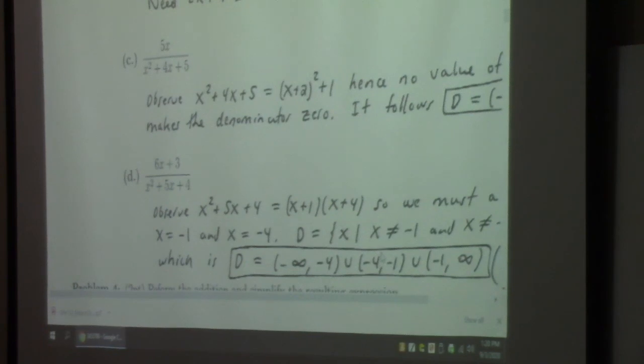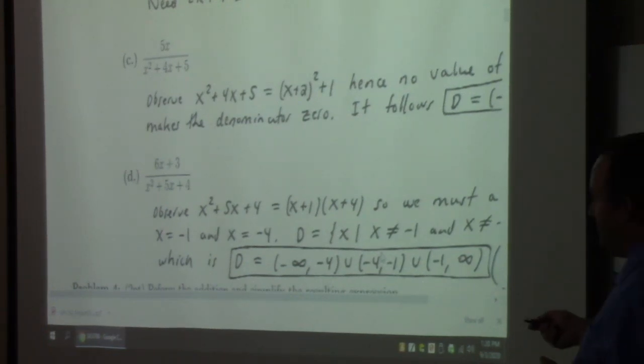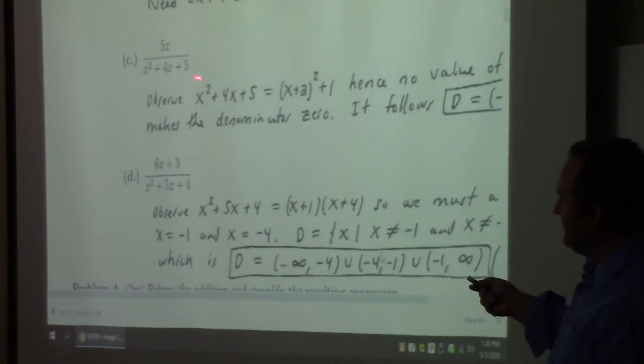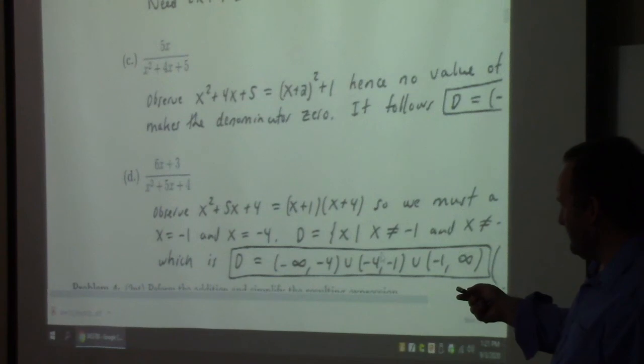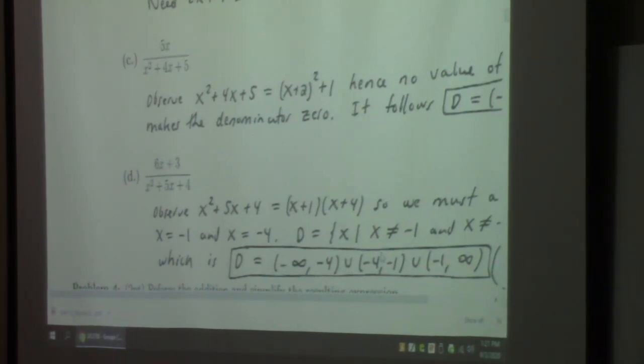This one here, 5x over x squared plus 4x plus 5, what is the possible danger here? The possible danger, at least in principle, is that that denominator function could go to zero. If this was zero, we're in trouble. How do we see whether or not a quadratic can possibly be zero? There are really two ways. You could factor it, or you could complete the square. So if you can't factor it, you better complete the square. If you could factor it, and it factored to like x minus 1 times x minus 2, then you'd know that 1 and 2 are places where it could be zero.